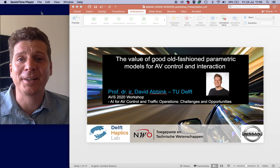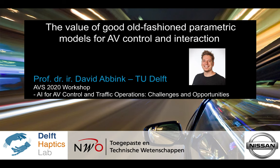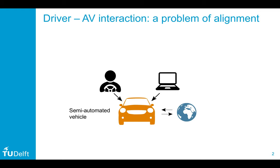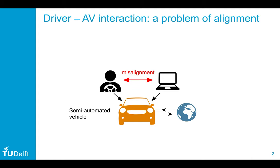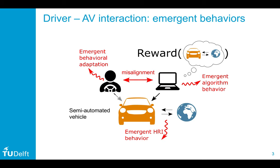In my opinion, as long as the algorithms behind automated vehicles are not 100% perfect always, everywhere, and for everybody, in the interaction with humans there might be a problem of alignment. The algorithms and the human might disagree, so we might have misalignment at some instances — it might be annoying, confusing, surprising, or sometimes dangerous.